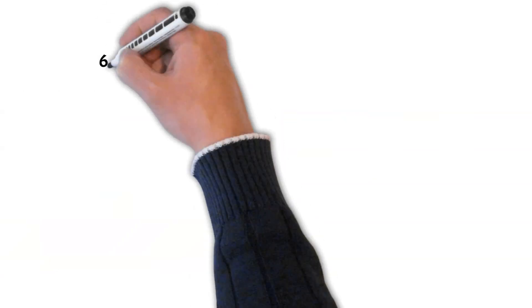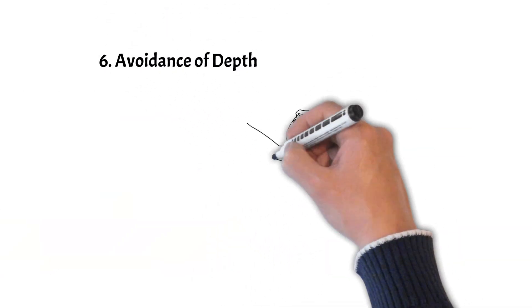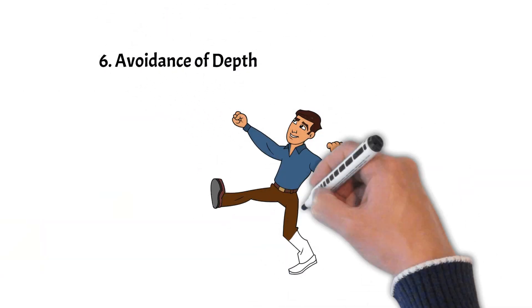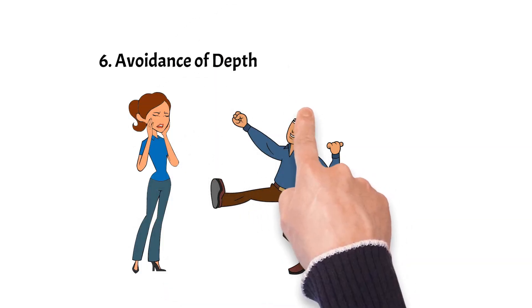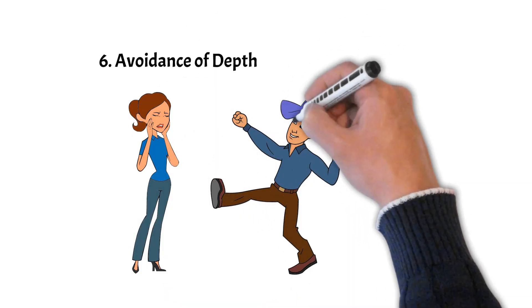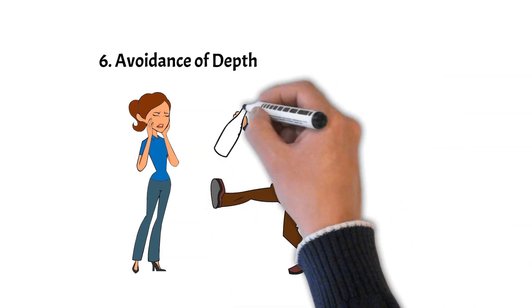6. Avoidance of depth. While not universally true, some 7s might avoid deeper and more meaningful conversations or reflections, preferring to keep things light and on the surface level.